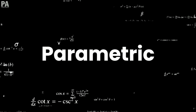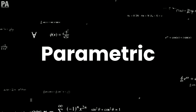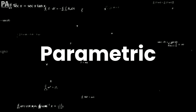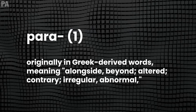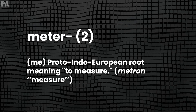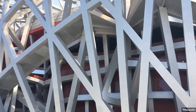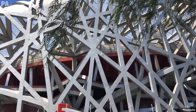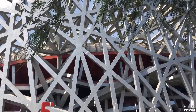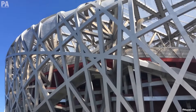The term parametric originates in mathematics, but the meaning might be a bit blurry. That's why we need to dig deeper into the origins. Para means 'beside' in Greek, while meter comes from metron, which means 'measure.' Combined together, it is a numerical or other measurable factor forming one of a set that defines a system or sets the condition of its operation. It's a bit complicated, but hear me out.